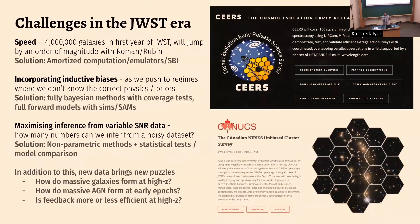New JWST data also brings new puzzles. Erica and her collaborators have been involved in the discovery of extremely massive high-redshift galaxies — the hashtag universe breakers — that seem to have formed a lot of stellar mass at very high redshifts, which is challenging to explain. Some of these galaxies also have very massive supermassive black holes that are also difficult to explain. There are also questions about whether stellar feedback has the same effect at higher redshifts, since the universe back then was much hotter and denser, so feedback is expected to work quite differently.